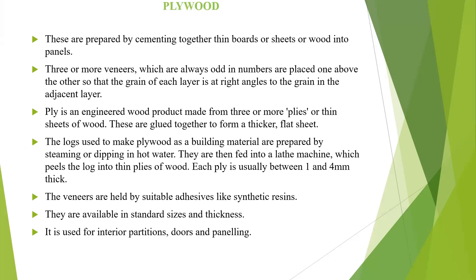Plywood is wood panels made of more than three veneer sheets. It is an engineered wood product protected with more than three layers or plies of wood. Plywood is used for building materials due to its strength, hot water resistance, and veneer layering. It is available in standard sizes and thicknesses and is used for interior panels and door paneling.